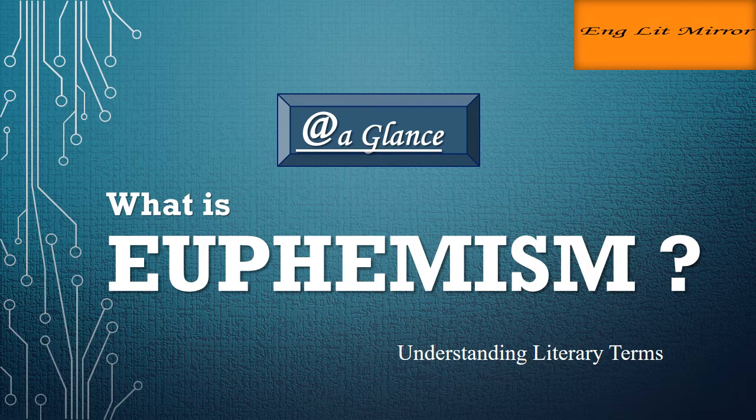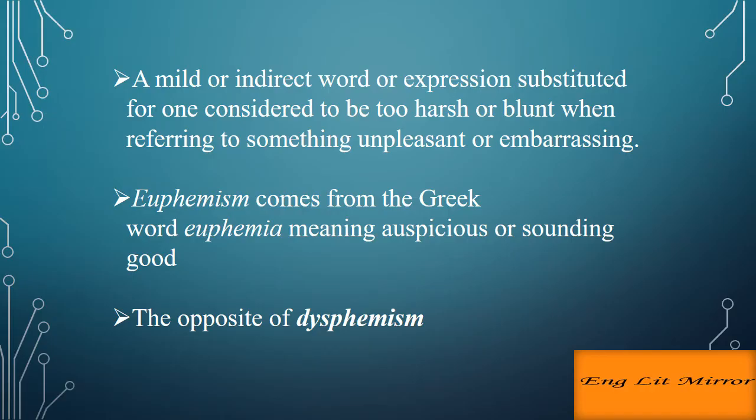So let's see what euphemism is. Euphemism can be defined as a mild or indirect word or expression substituted for one considered to be too harsh or blunt when referring to something unpleasant or embarrassing.